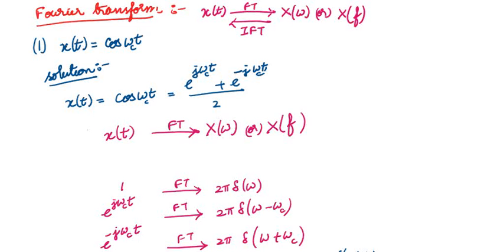What is Fourier transform? Fourier transform converts a time domain signal x(t) into the frequency domain — either X(ω) or X(f). You can express the result in terms of omega or f. So conversion of time domain to frequency domain using a transform is called the Fourier transform.